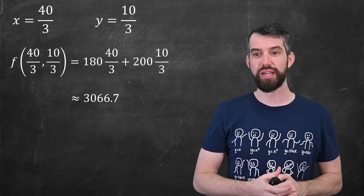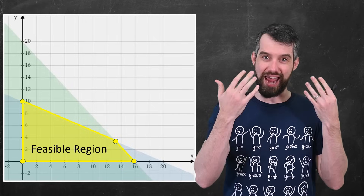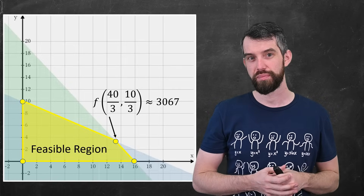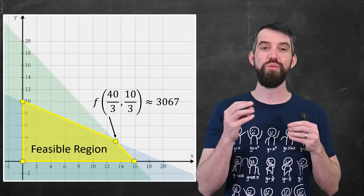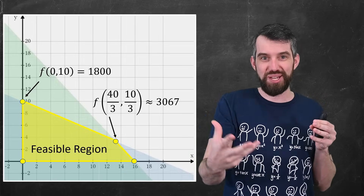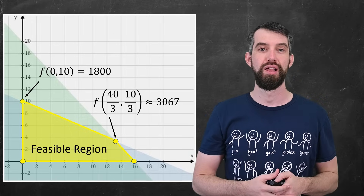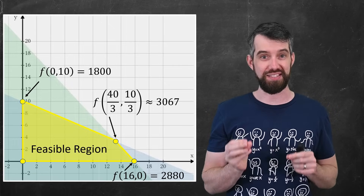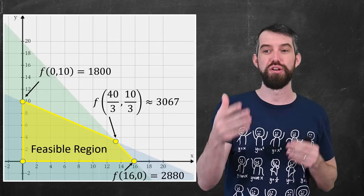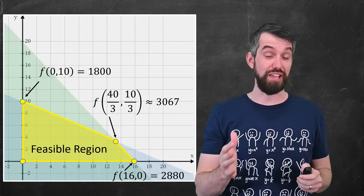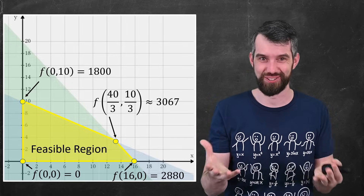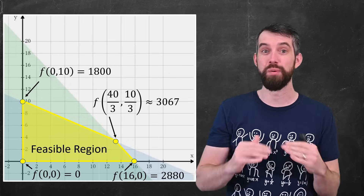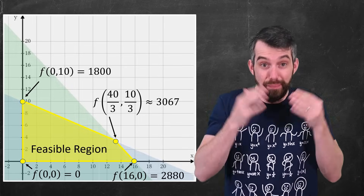The claim is that at this vertex — x equals 40/3 tables and y equals 10/3 bookshelves — I make about $3,067. The other vertices are also interesting: making zero tables and focusing only on bookshelves makes $1,800; focusing only on tables with no bookshelves makes $2,880 — much better, but still less than the optimal $3,067. And making zero tables and zero bookshelves makes zero dollars. So the maximum is $3,067 and the minimum is zero, and both occur at vertices.